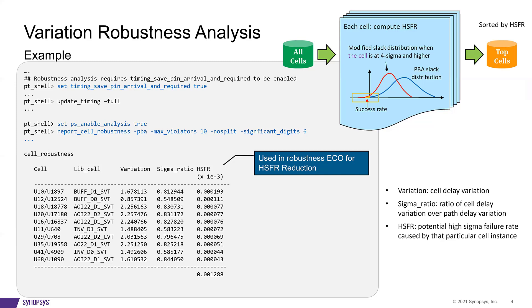The cell robustness report is generated by a report cell robustness command, and the report is shown at the bottom. The cells are sorted based on this HSFR.